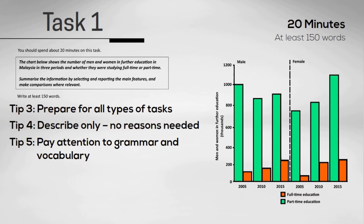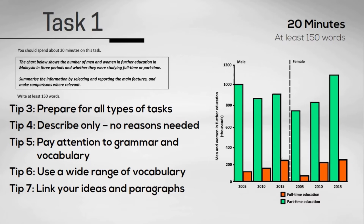Tip number 6 is to try to use a wide variety of vocabulary as possible. But remember, don't copy from the rubric. Your organization is also important. Use paragraphs and link your ideas together. But don't overuse words such as furthermore, moreover, and besides. That's tip number 7.